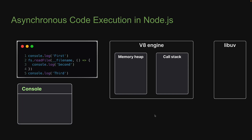Next, let's take a look at asynchronous code execution. On the left, we have another code snippet — three log statements like before, but this time the second log statement is within a callback function passed to fs.readFile. The main thread of execution always starts in the global scope, so the global function is pushed onto the stack.